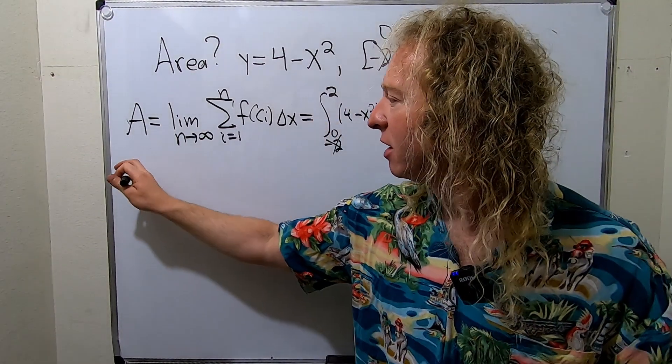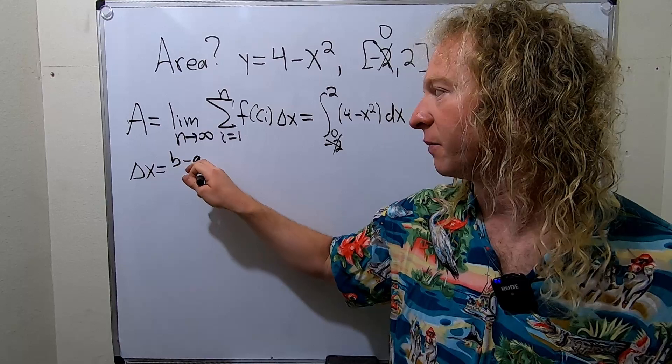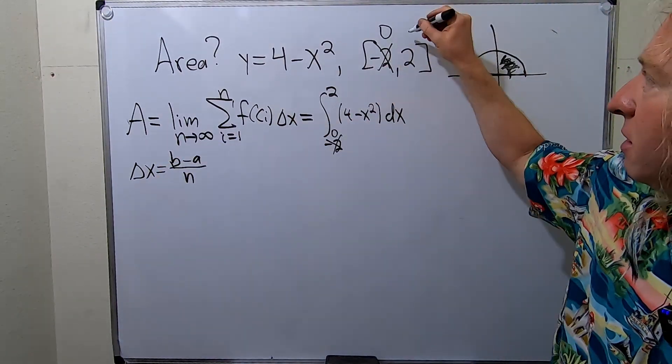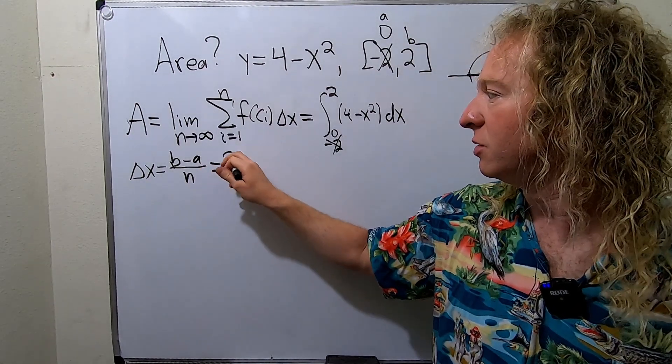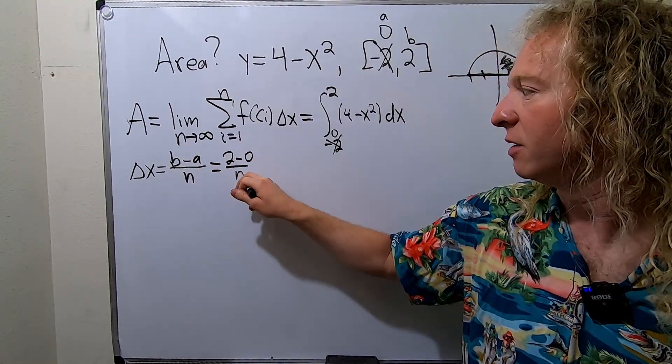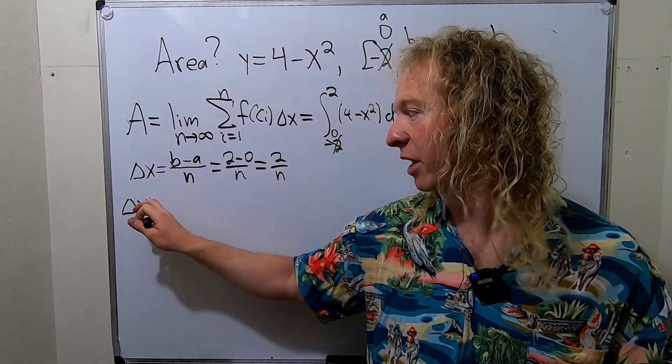So delta x what is that? So delta x is equal to b minus a over n. So b here is going to be the 2 and a is going to be the 0. So this will be 2 minus 0 over n. So this is just 2 over n. So delta x is 2 over n.